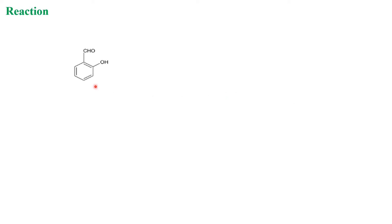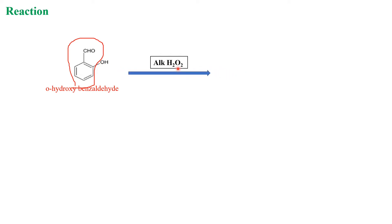Now we will see the reaction. The starting material is aryl aldehyde or ketone having an ortho-hydroxy group — this is called ortho-hydroxybenzaldehyde. By treating with alkaline hydrogen peroxide, the aldehyde is converted to a hydroxy group. The product is called catechol, which is chemically called ortho-dihydroxybenzene, because both hydroxy groups are ortho to each other.